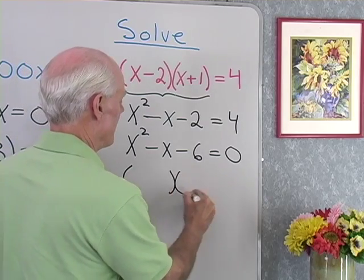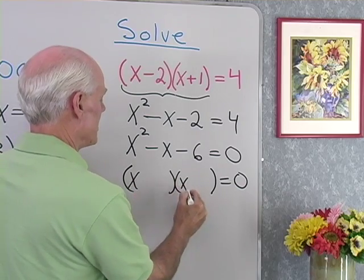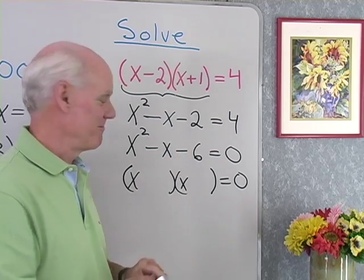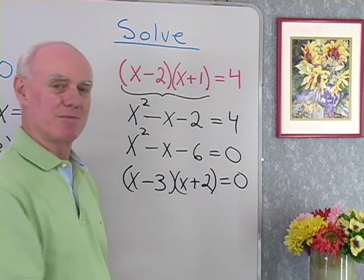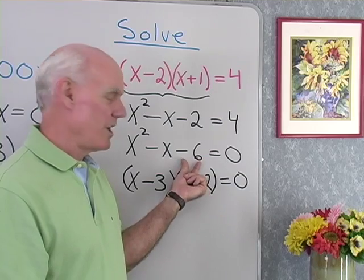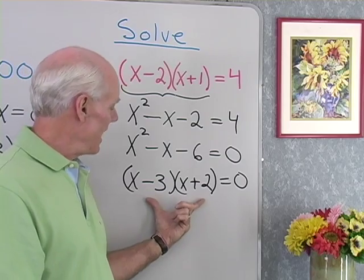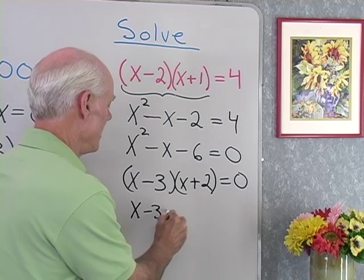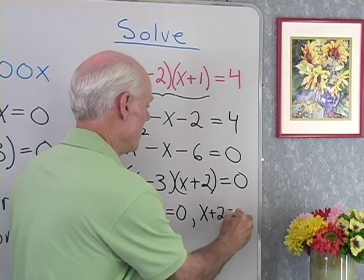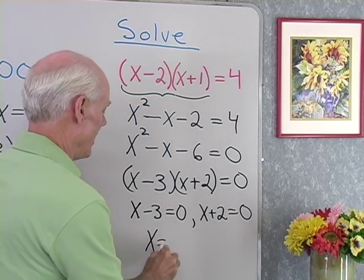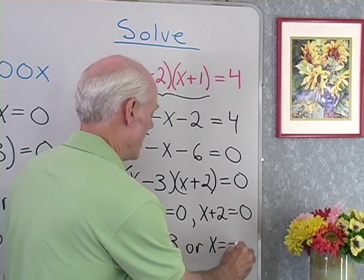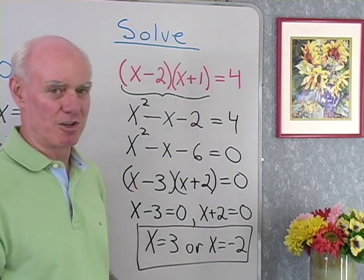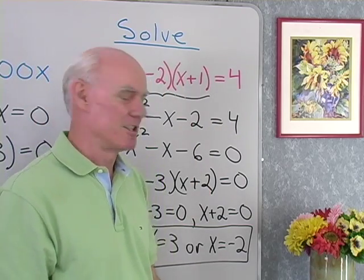Now I have a quadratic equation in standard form equivalent to my original equation. I'll factor it: x and x to give x squared. I need two numbers that multiply to give negative 6 and add to give negative 1. How about negative 3 and positive 2? Negative 3 times positive 2 is negative 6, the inside product is negative 3x, the outside product is 2x, and together they give negative x — it checks. So I set x minus 3 equal to 0 and x plus 2 equal to 0, giving x equals 3 or x equals negative 2 as my two solutions. Substituting either back into the original equation gives 4 on both sides.